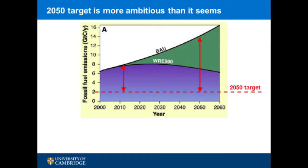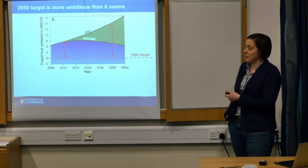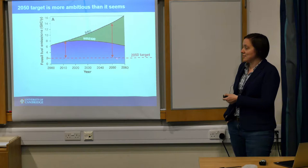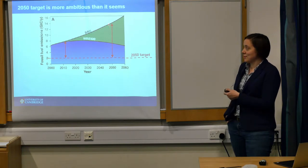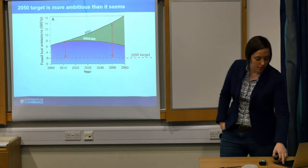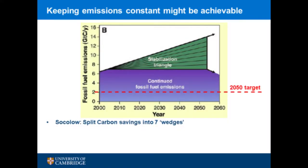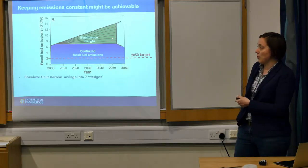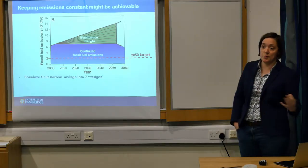As we go to 2050, if we want business as usual economic growth, we would be up here in terms of fossil fuel emissions. So to get down to 20% of 2010, we've got to do an enormous amount of cutting of carbon. But perhaps we might be able to keep our emissions constant over that period — have economic growth but do it in a way that doesn't emit any more carbon. And Socolow did a piece of work where he said maybe we could split this into seven wedges, each from a different source of saving carbon.